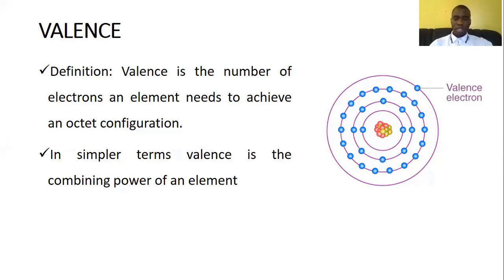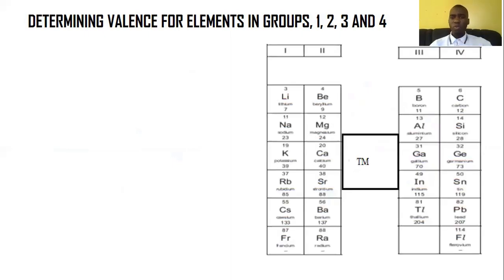Now, let's begin by determining the valence for elements in groups one, two, three, and four. So now these groups have been paired together because the rule that governs how to find the valence in these respective groups is actually the same. What is that rule? So before we can even introduce that rule, let's just look at these groups. So these are the groups that we are talking about. This is group one right here. This is group two. This is group three. And this is group four. So you skip this one.